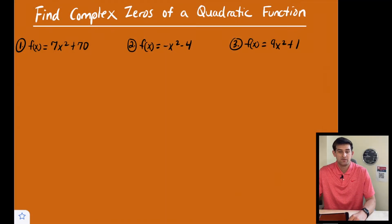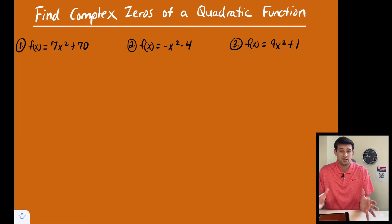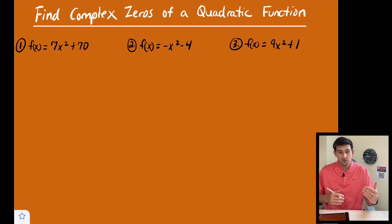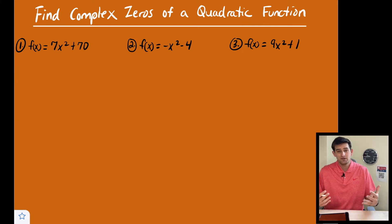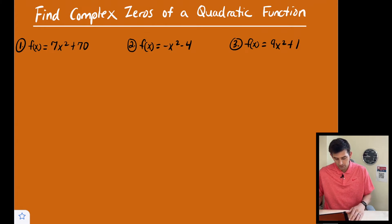Hello everyone. In this video we're going to talk about finding complex zeros of quadratic functions. This is very similar to solving a quadratic equation by trying to use the process of factoring, but in this case we're talking about a function — we have f of x. Finding the zeros of the function is just a different term for the same thing as finding the solutions of x. So here we have number one, two, and three.